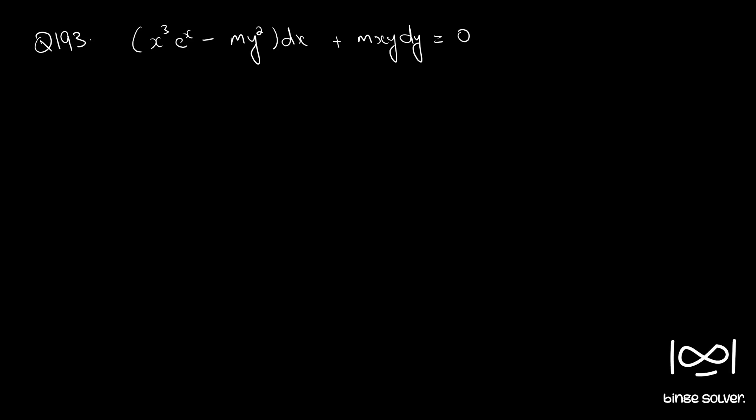Question number 193: x cube e raised to x minus m y square dx plus m x y dy equal to 0.